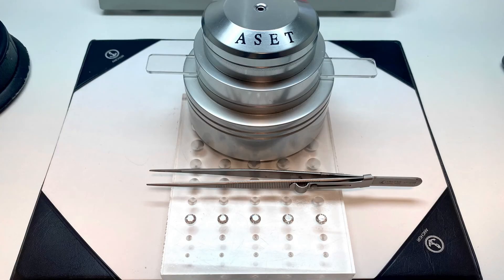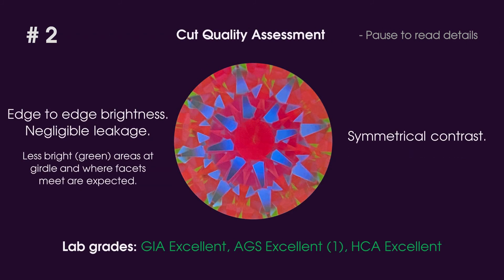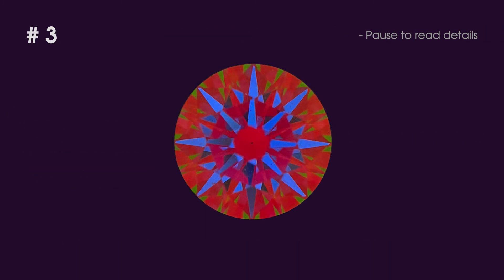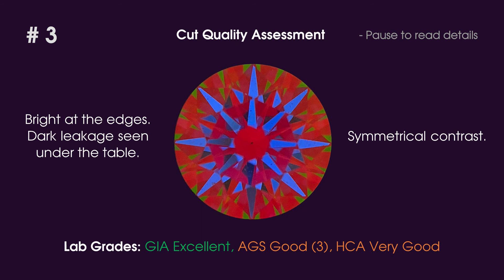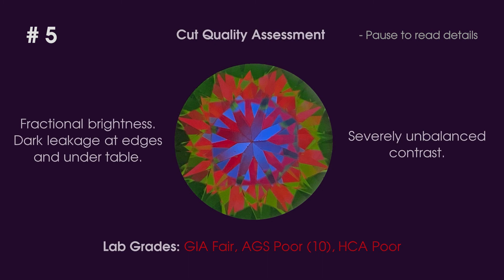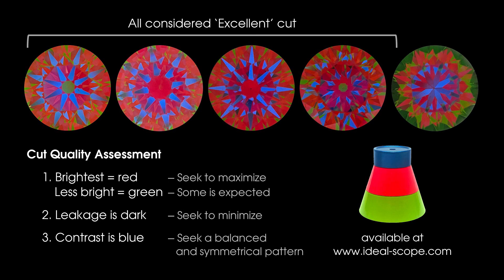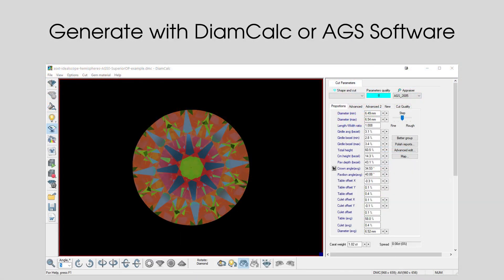In closing, we'll show you photos of five examples, coming one to five from best to worst. It should be useful to know the first four all qualify for the excellent cut grade. With Asset analysis, you can tell which are most bright and dynamic and which suffer from leakage and brightness reduction. Your jeweler can purchase one at idealscope.com, or generate an Asset image with a 3D scan using DiamCalc software.